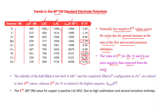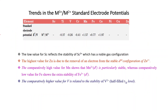The reasons for these exceptions: the stability of the half-filled d⁵ sub-shell in Mn2+ and the completely filled d¹⁰ configuration in Zn2+ are related to their E° values. The E° for Ni is related to its highest negative hydration enthalpy. The positive E° for copper is due to high sublimation enthalpy and high second ionization enthalpy.